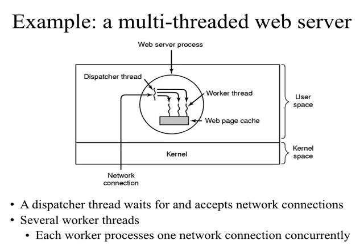Going back to the robustness example: in the web server program, if one thread crashed the entire web server would crash. One way to increase robustness is to use multiple processes — if one process crashes, the others can still continue to serve network connections. You can get the advantages of both threads and processes by having multiple processes in the web server, with multiple threads within each process. Many commercial web servers such as Apache use this hybrid model.